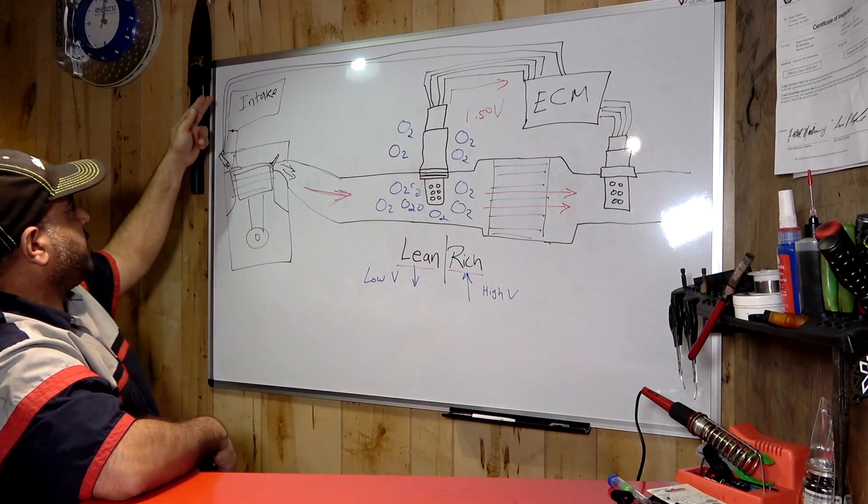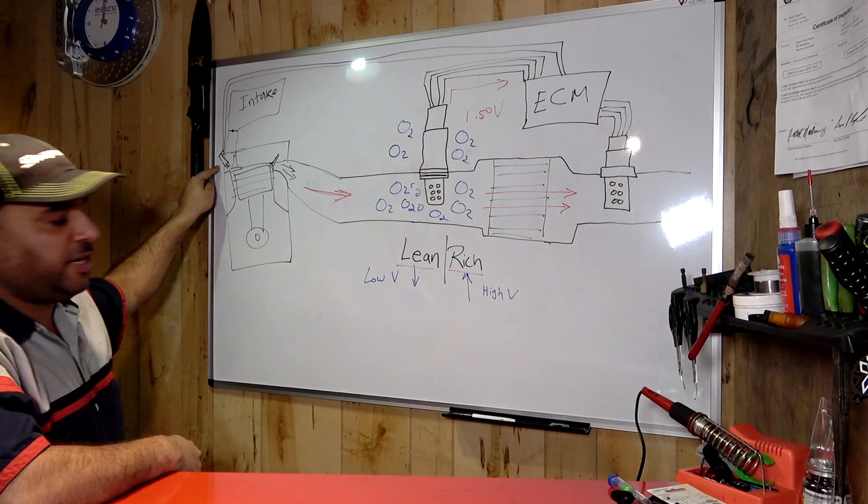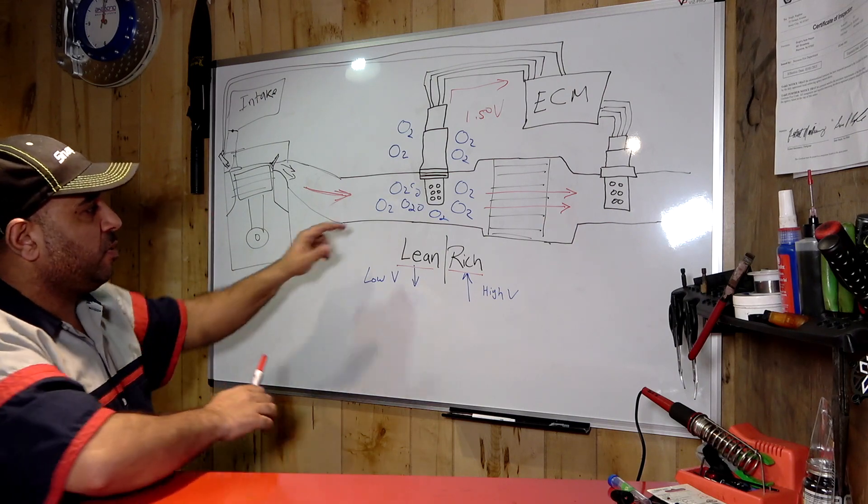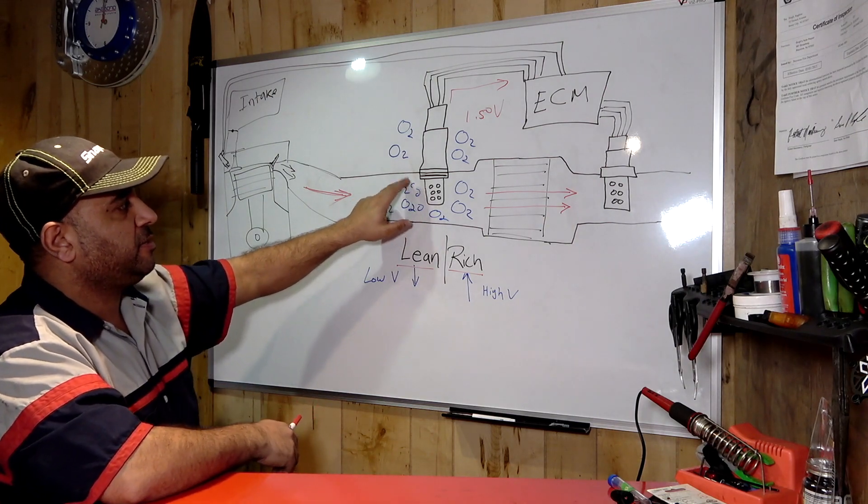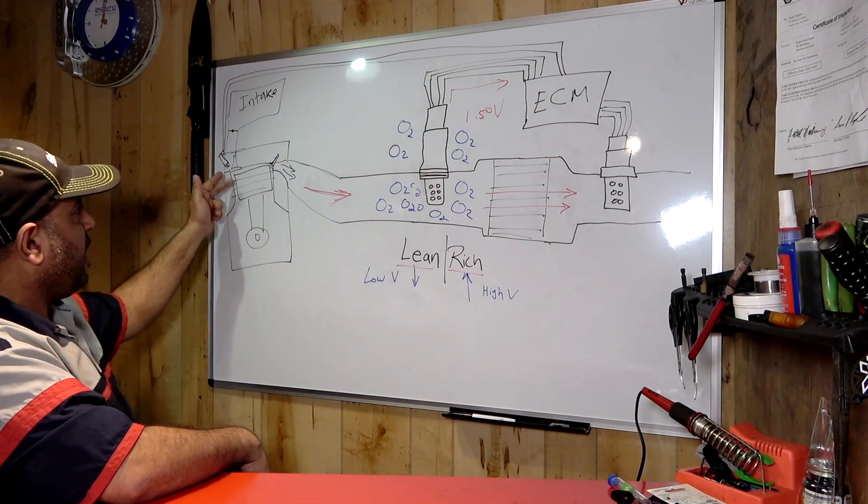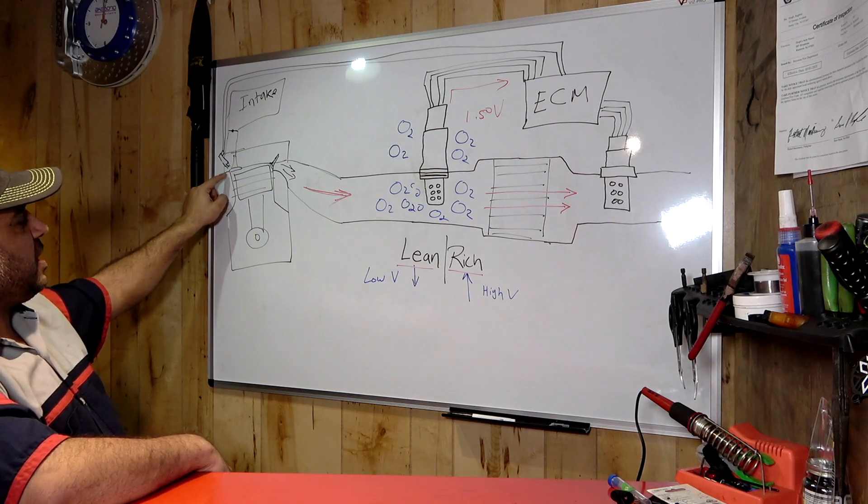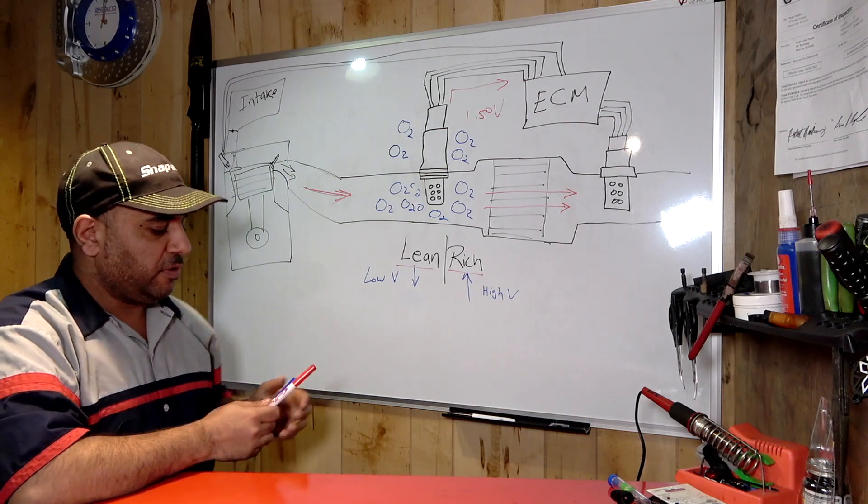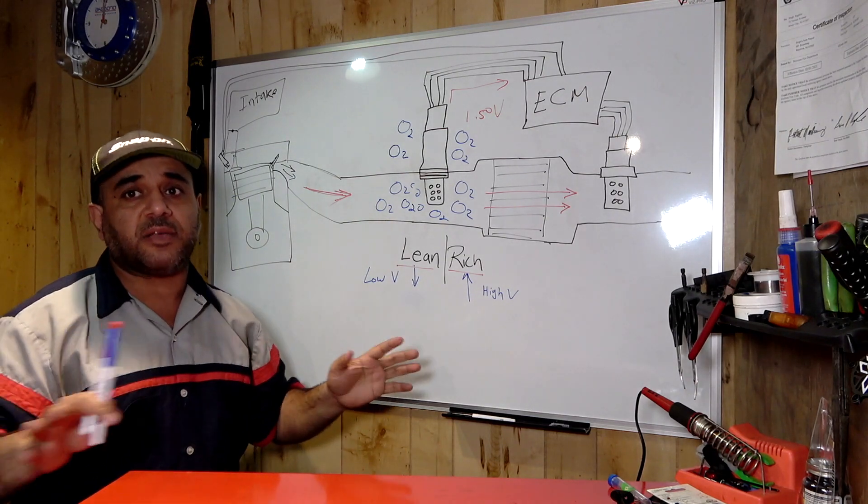The computer is gonna send a signal to the injector here to cut off the fuel or add fuel depending on what kind of signal it sees. If this is too much, it's lean. It's gonna try to richen it up. It's gonna give a command for the injector to open a bit more so it can shoot more fuel into the system.